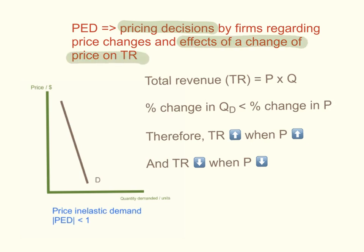Basically, total revenue is how much the firm gains from selling its output. It's price times quantity. If you sell 100 cars and each car is worth $1 million, you earn $100 million.